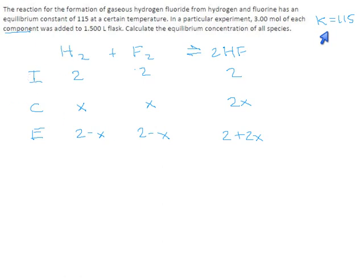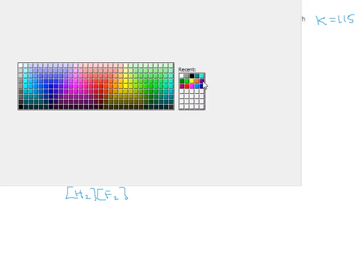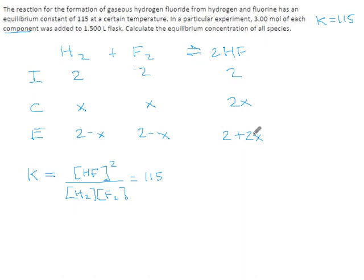So how do we solve this thing? Well, we can write a K expression for this, an equilibrium law, and it would be hydrogen fluoride squared, because there's a two there, over hydrogen and fluorine, and that has to come out to 115. Now we can put values into that. HF is 2 plus 2x, 2 plus 2x, all squared. Hydrogen is 2 minus x. Fluorine is also 2 minus x, so I'm going to just write this squared because that's a little bit easier, equals 115.